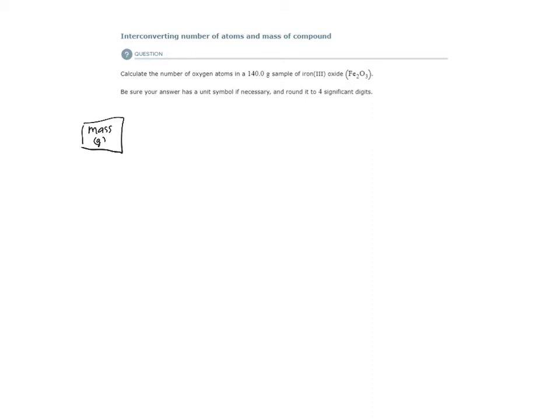We are tasked with finding the number of oxygen atoms. So we need to go from mass. Our next stop would be moles. So we could go from a mass of iron 3 oxide to moles of iron 3 oxide. How do we do that?